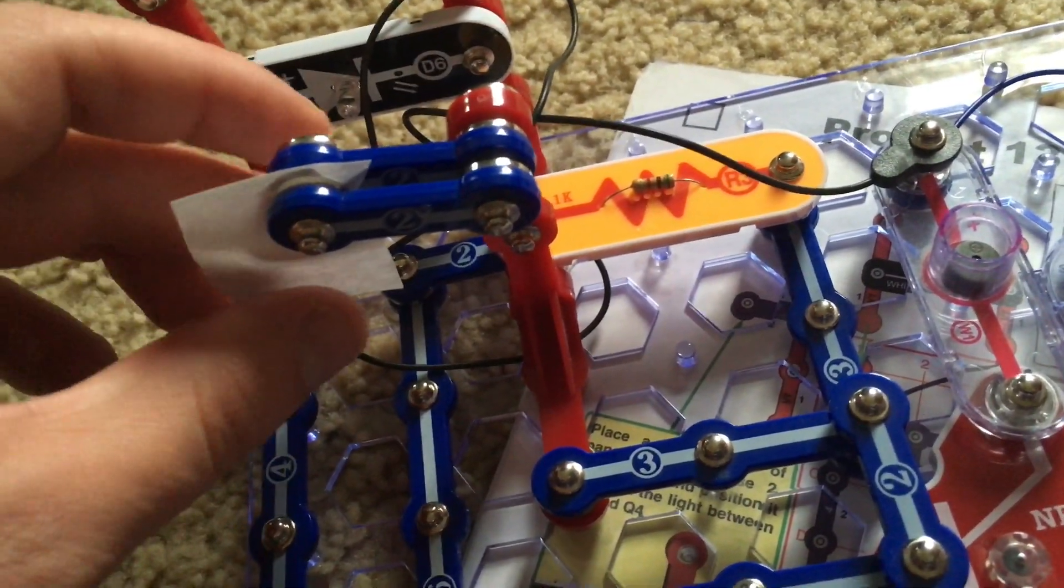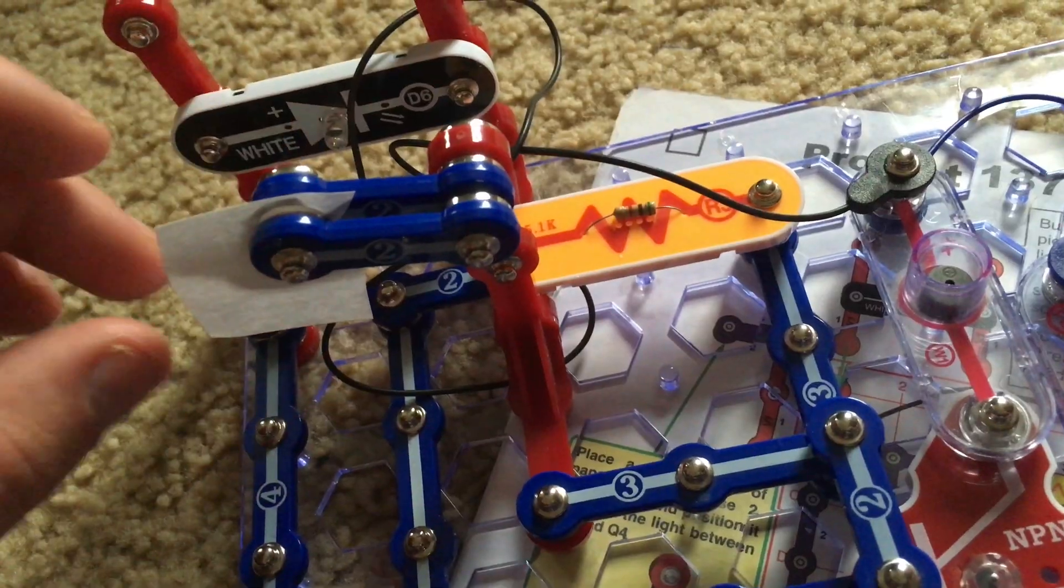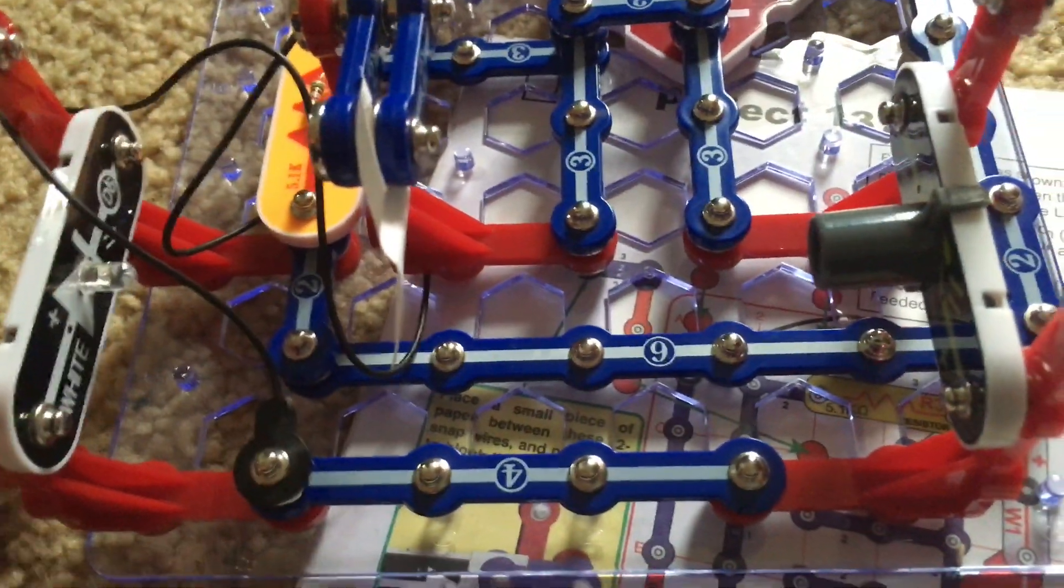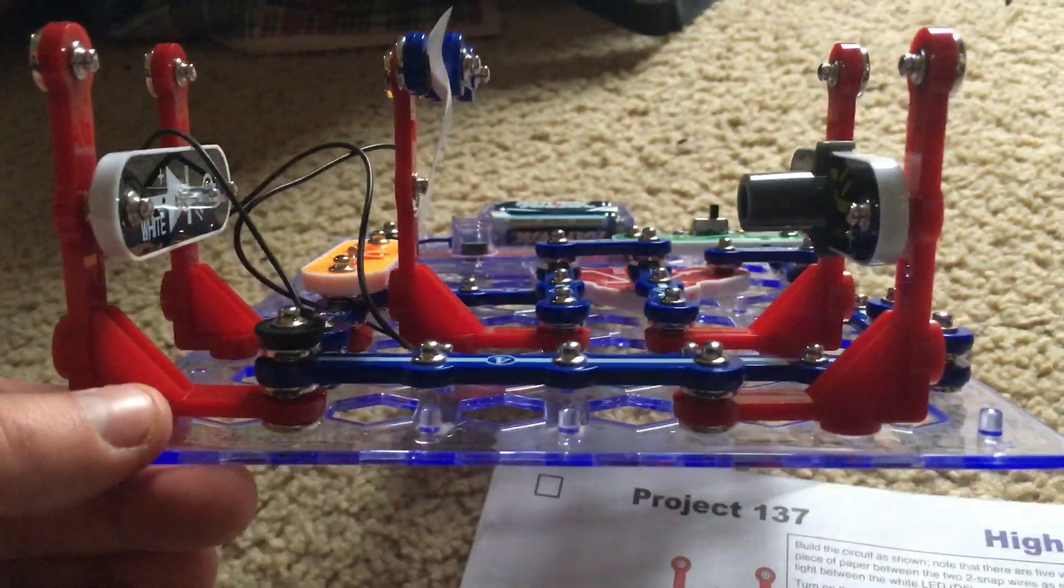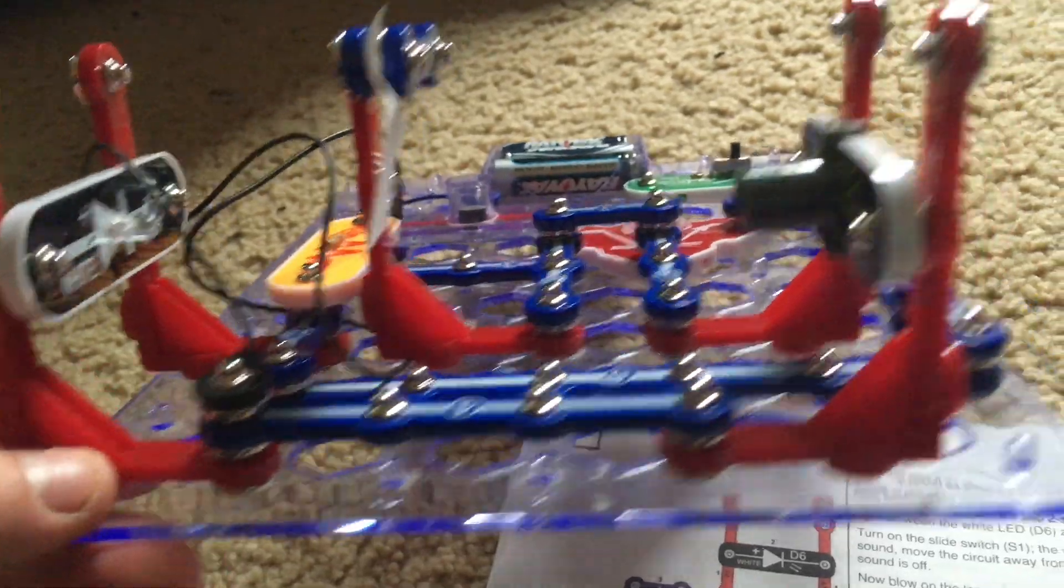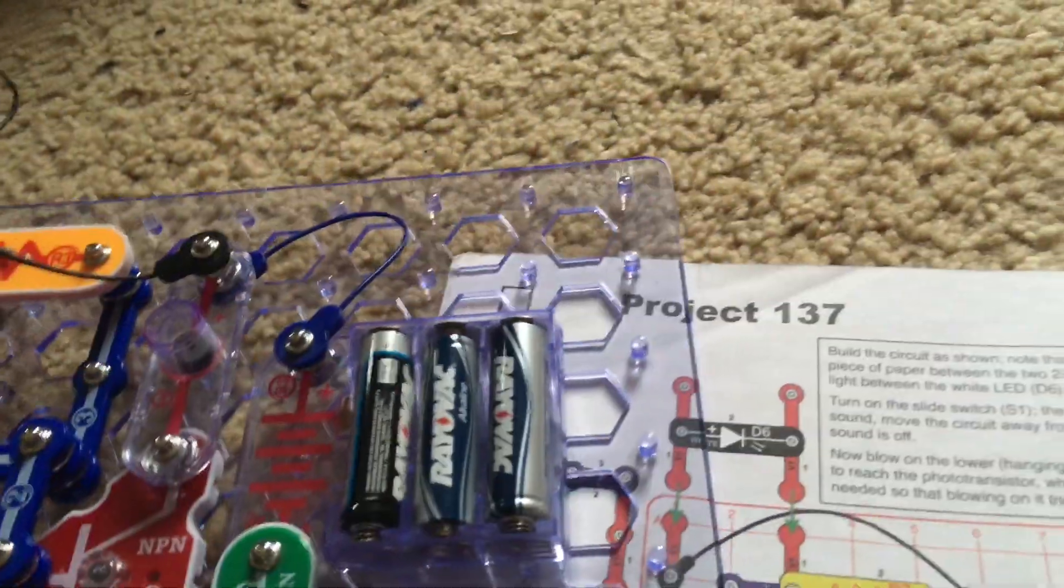The paper has to be hanging by the top and it has to be right in between the white LED and photo transistor which has the Q4 attachment over it. Now I'm going to turn this circuit on.